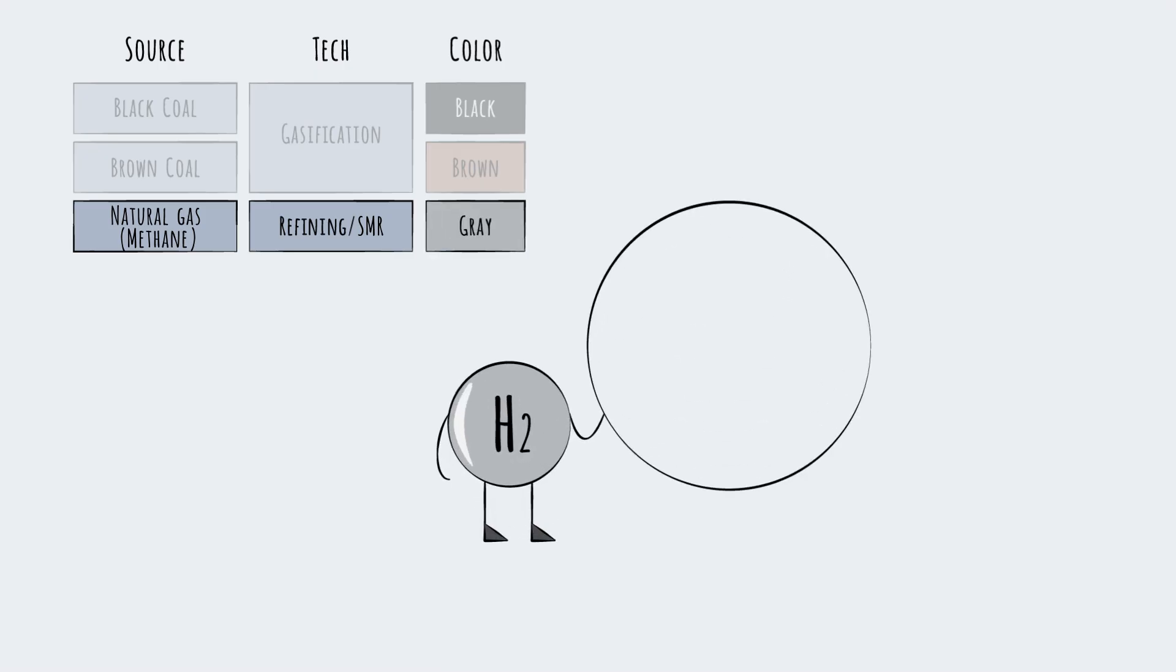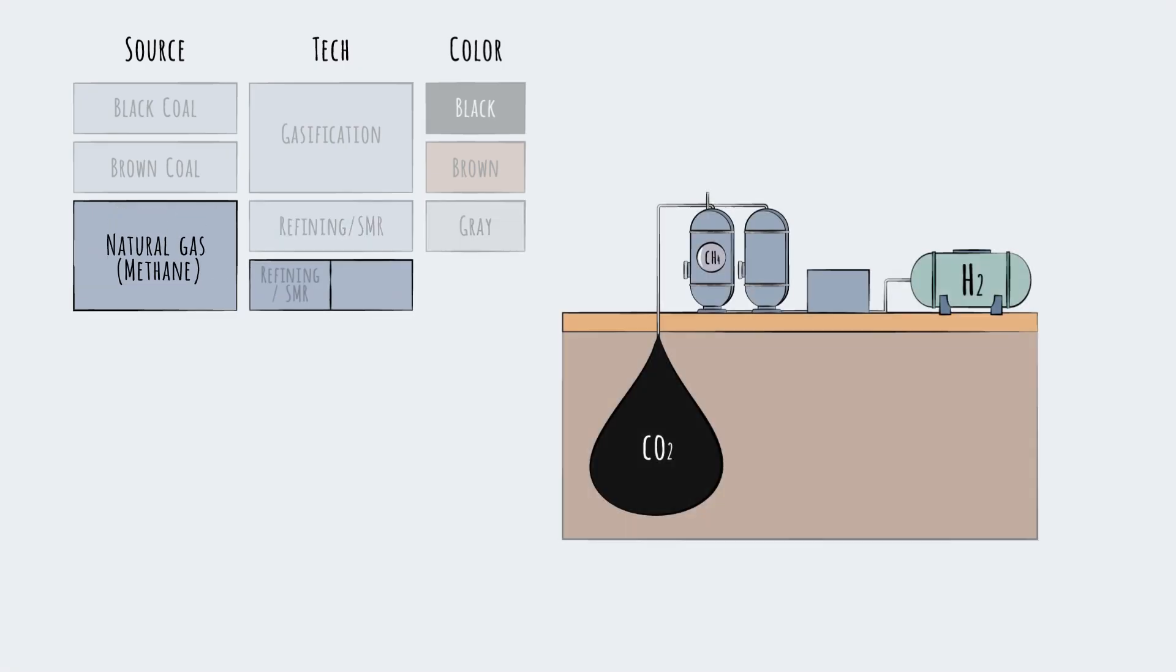In both cases, the resulting hydrogen is assigned the color gray. Gray hydrogen is low cost and commonplace. In fact, 95% of global hydrogen production today is gray hydrogen. The carbon footprint of gray hydrogen can be improved by capturing the byproduct carbon gases. The resulting hydrogen is then rebranded from gray to blue.